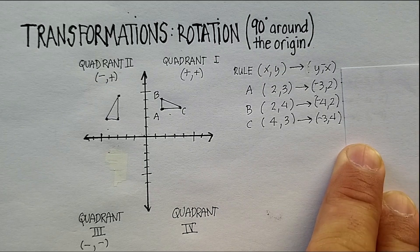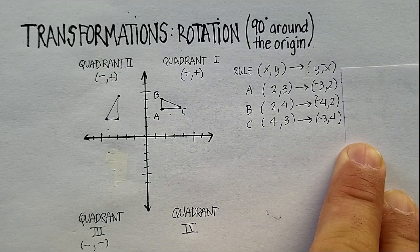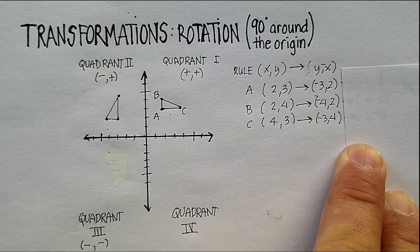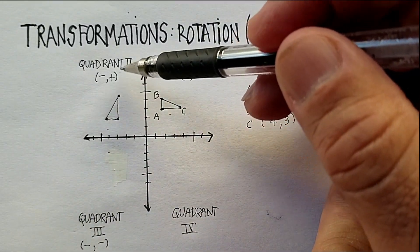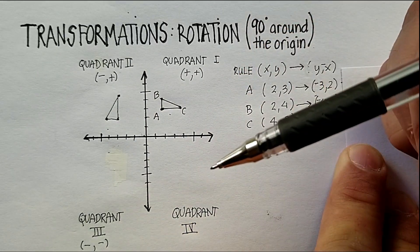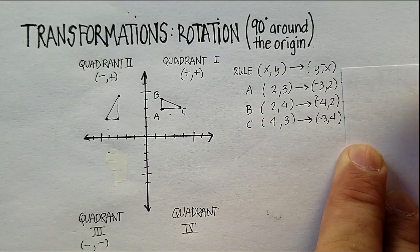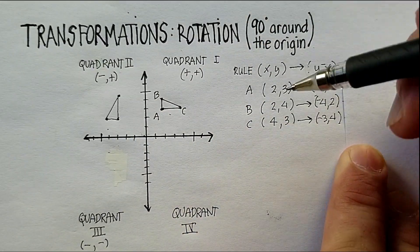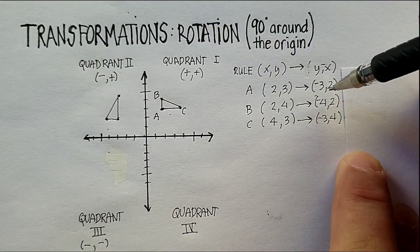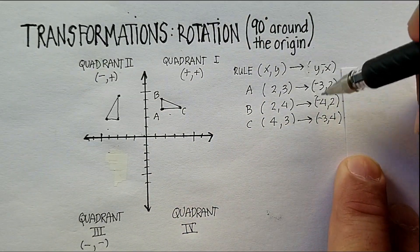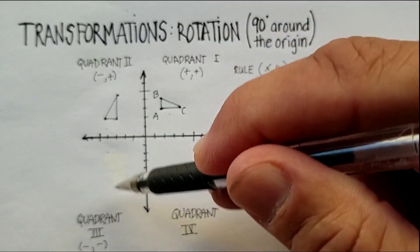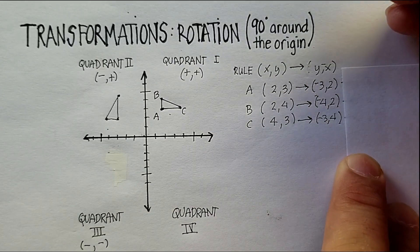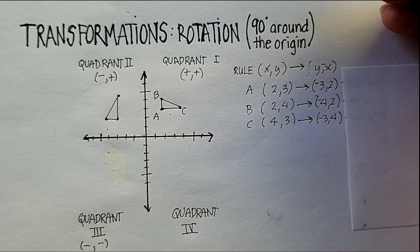Now here's a question: let's say I started in quadrant two and I want to move to quadrant three — what would the coordinates of my new triangle be? Let's take a look.